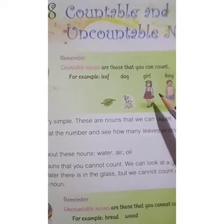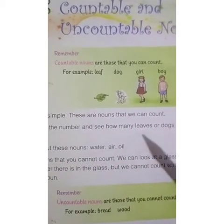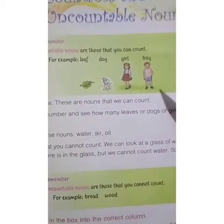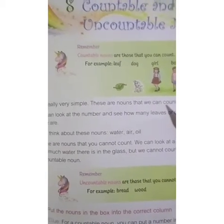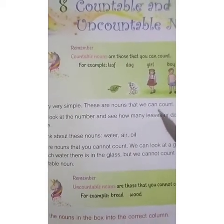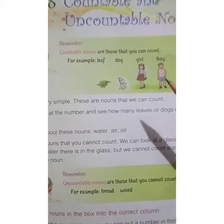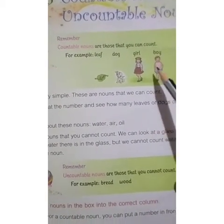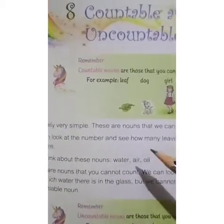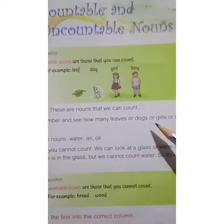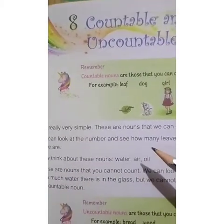So students, what are countable nouns? Countable nouns are those that we can count. For example: leaf, dog, girl, boys. Countable nouns are very easy, very simple, because these are nouns that we can count. You can look at the number and see how many leaves, or dogs, or girls, or boys there are.